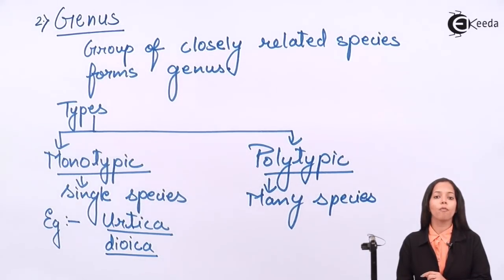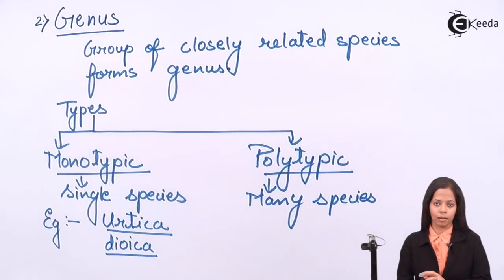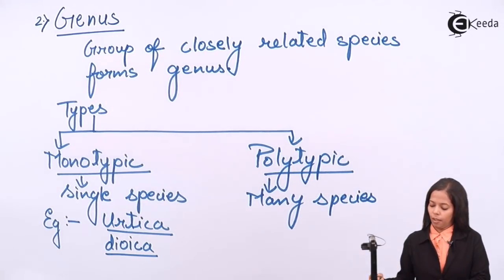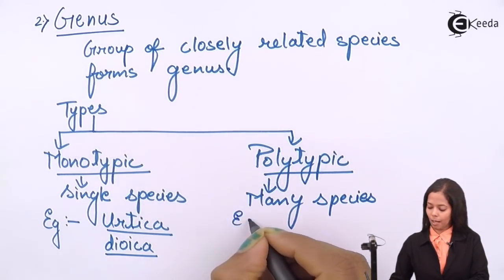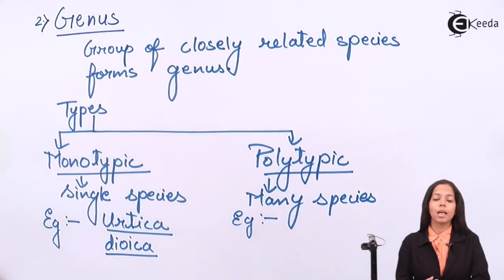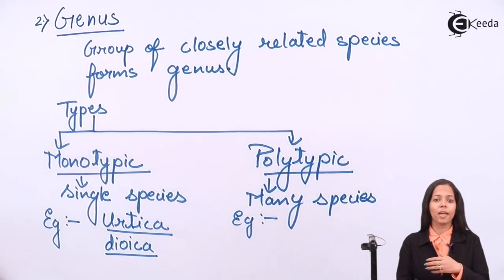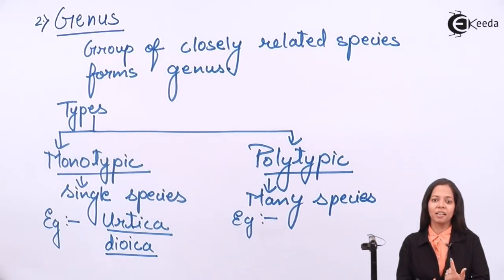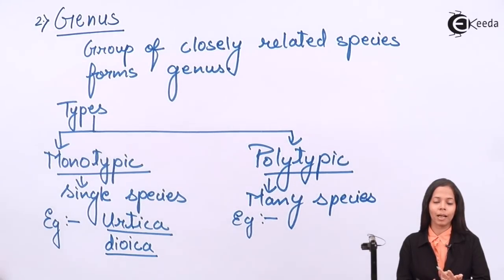The common name of Urtica dioica is the stinging plant — a plant that stings or bites. An example of a polytypic genus is Panthera, under which there are various species: tigris (tiger), leo (lion), pardus (leopard), and onca (jaguar).